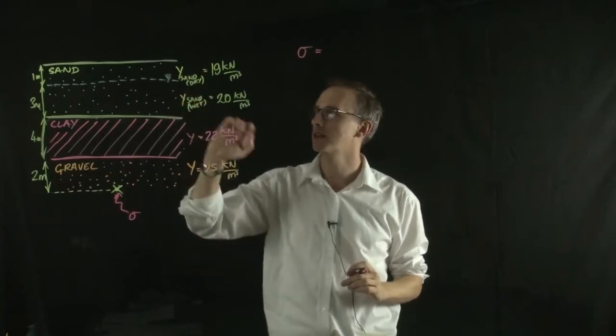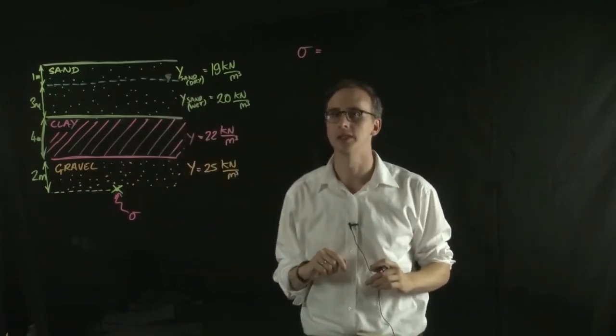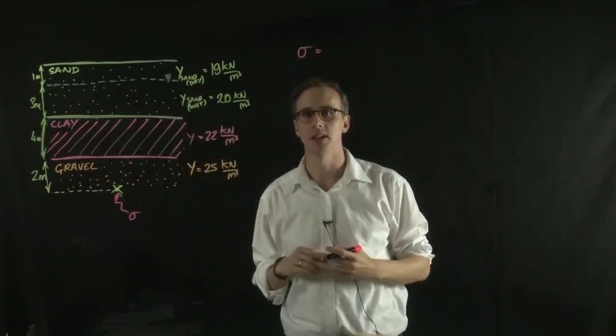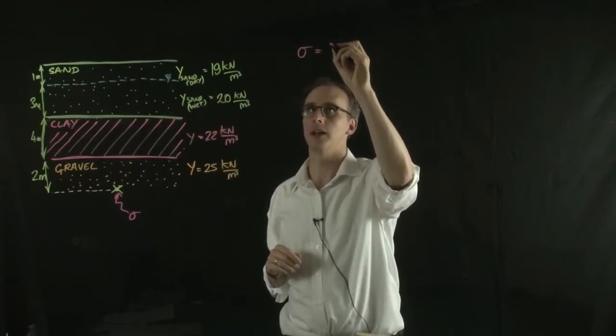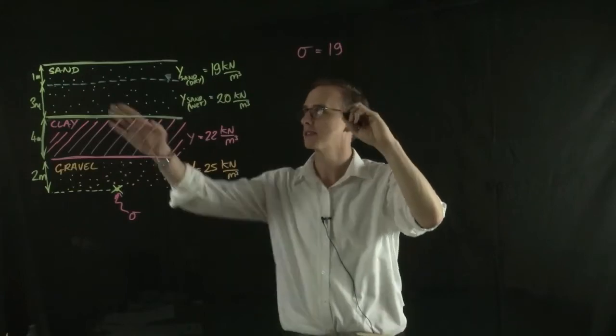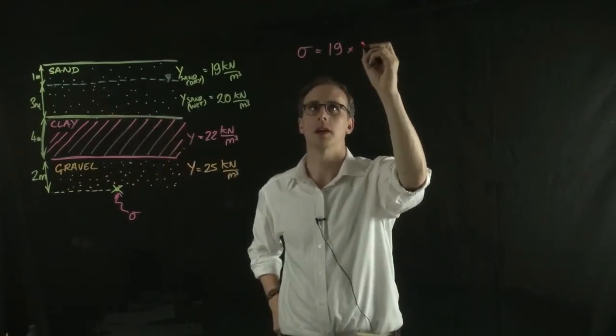So for the total stress we can take the dry sand above the water table and treat that as a single layer. So we take the unit weight of that sand and we multiply it by its thickness. So 19 multiplied by 1.